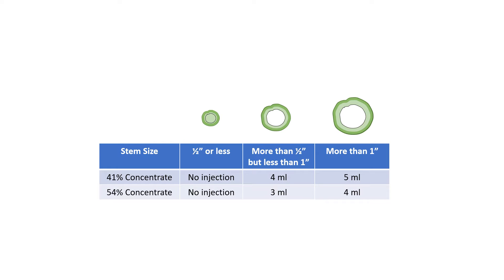The dose is based on stem size. Herbicide labels state you should use a maximum of 5 ml for each stem. However, research indicates that 3 ml of the 54% concentrate is sufficient. Therefore, if you are injecting 54% concentrate, set the dose at 3 ml.